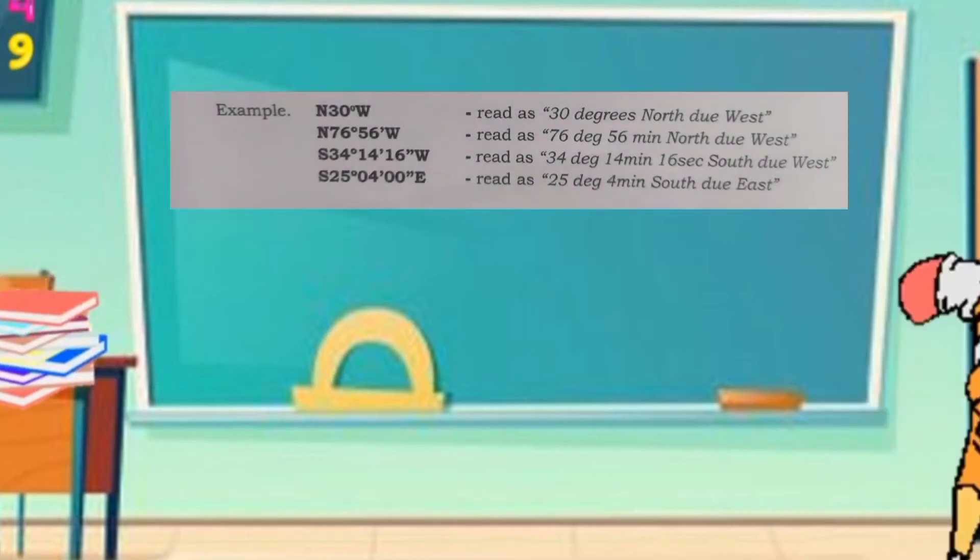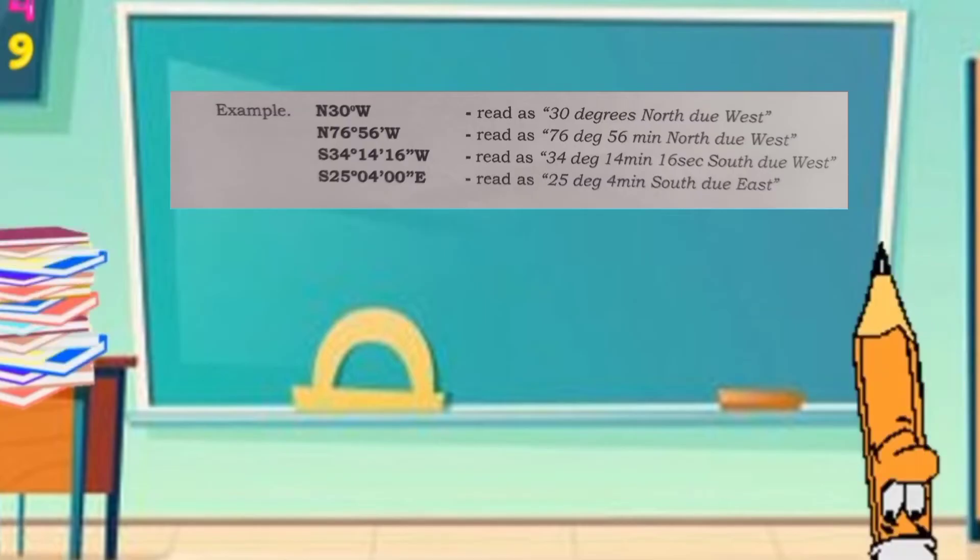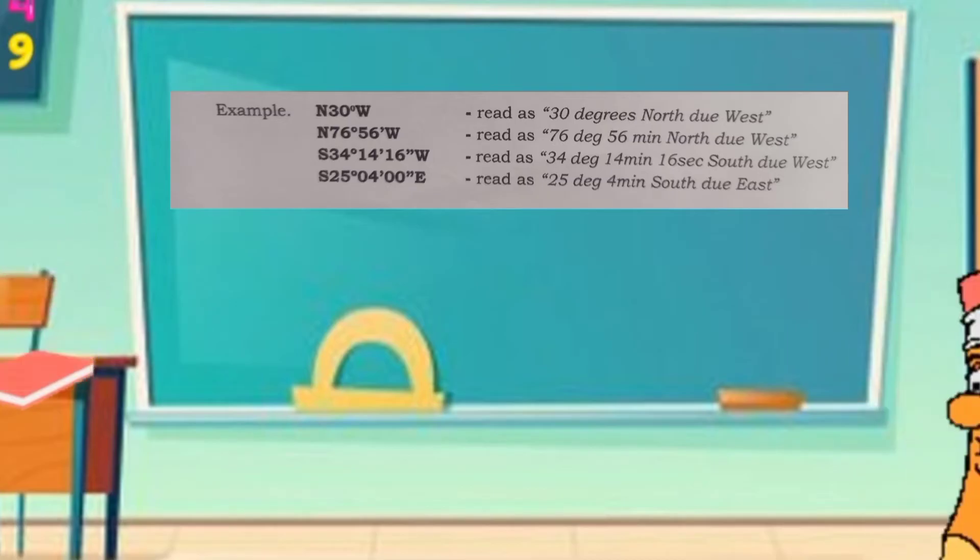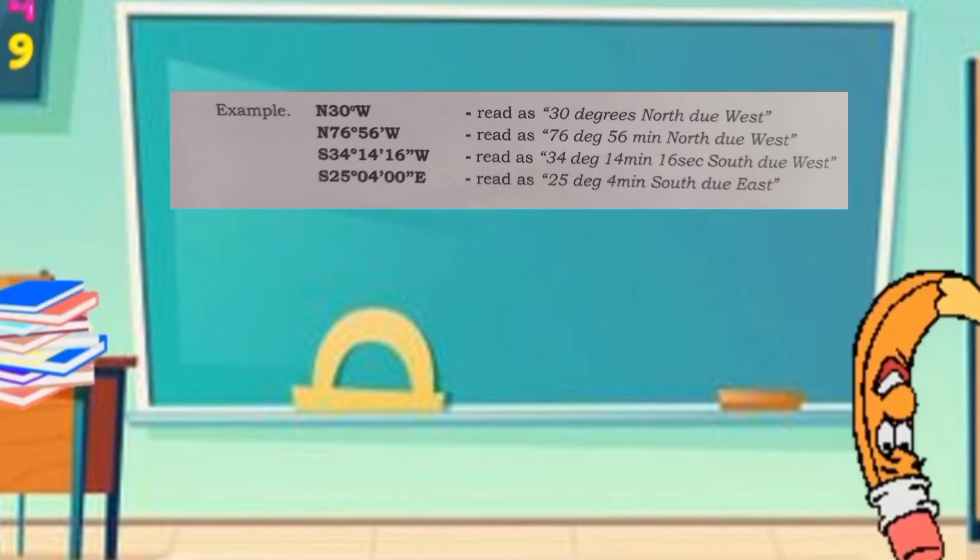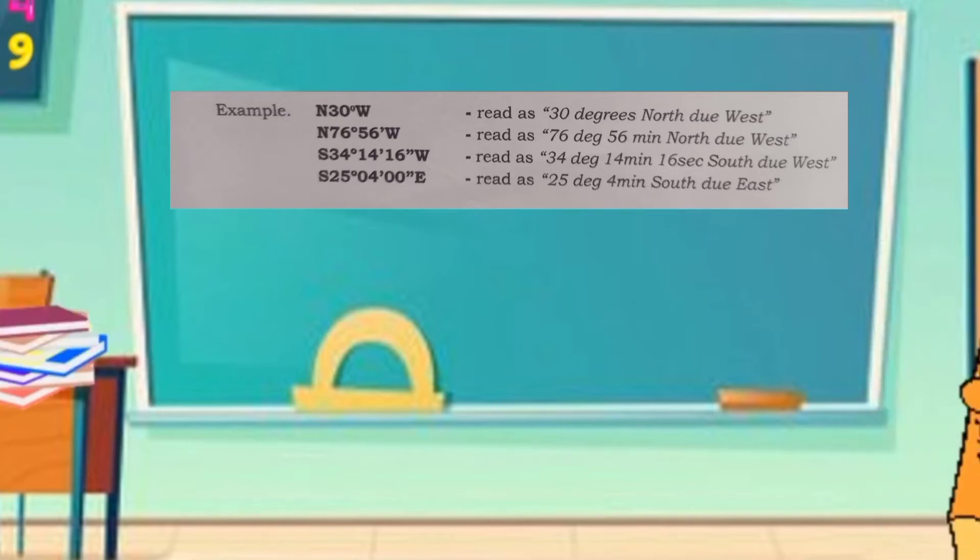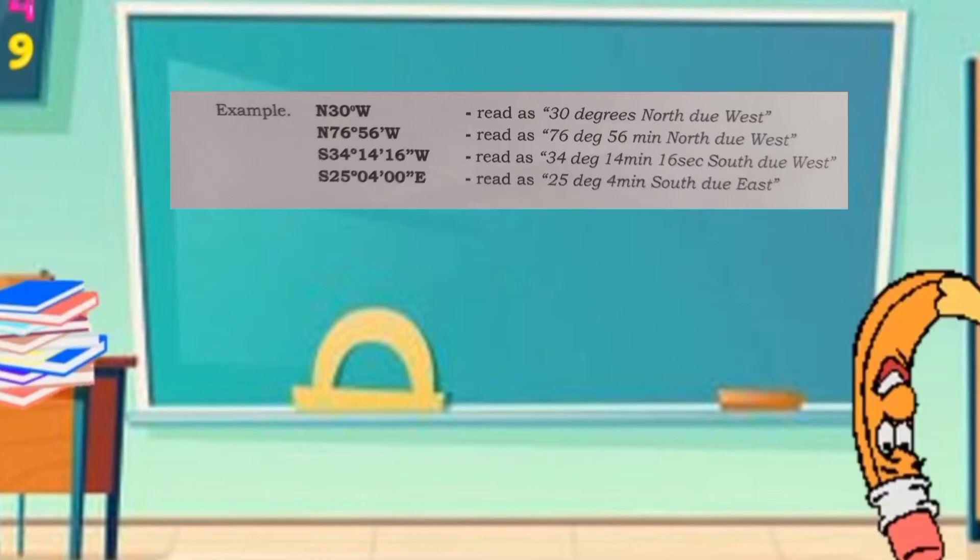Example, N 30 degrees west. Read as 30 degrees north, due west. N 76 degrees 56 minutes west. Read as 76 degrees 56 minutes north, due west.